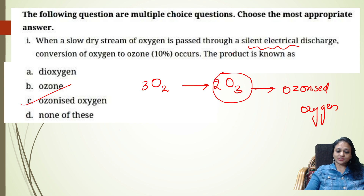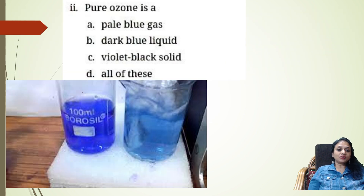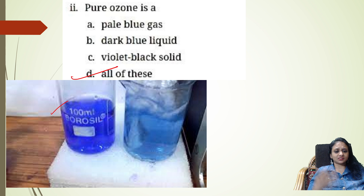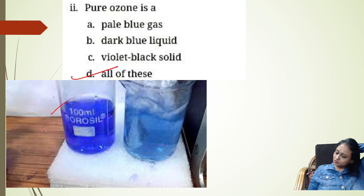Question 2: Pure ozone is which colour? The options are pale blue, dark blue, and violet-black solid. Students, it is all of these — that is the colour of ozone at different states. All of these together is the correct answer. The colour of ozone is also something you must remember.